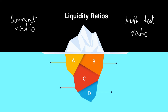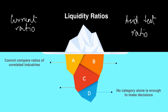Two of the limitations from profitability ratios also apply to liquidity ratios: these ratios are only useful when comparing within the same industry — comparing unrelated industries is no good — and similar to profitability ratios, liquidity ratios also give you numbers but you need context to make more informed decisions. However, there are a couple of limitations specific to liquidity ratios.